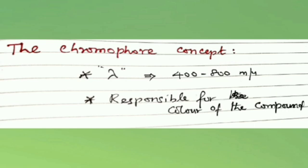Chromophores are functional groups that absorb UV or visible light. Examples include C=C (double bond), C≡C (triple bond), C=N, and N=N. Chromophores typically absorb at lambda values of 400 to 800 millimicrons (nanometers).